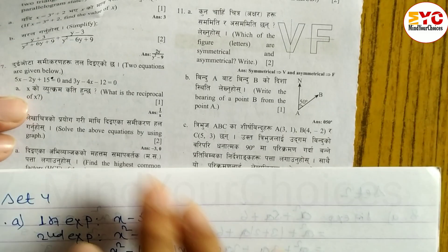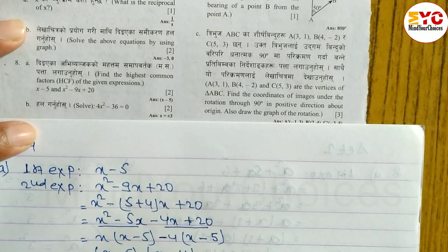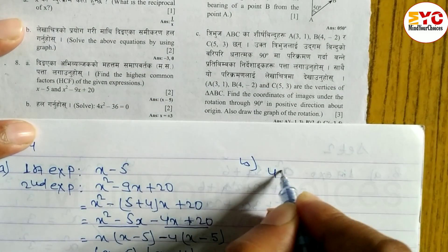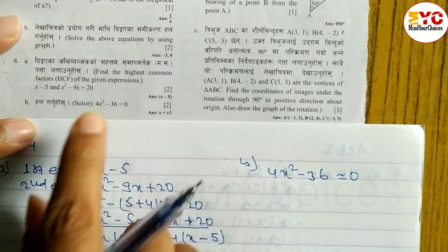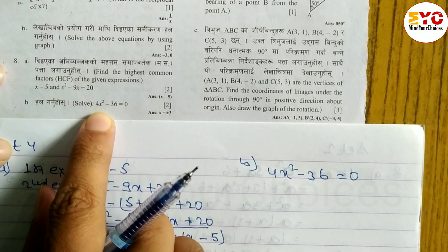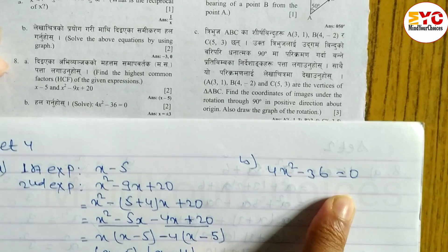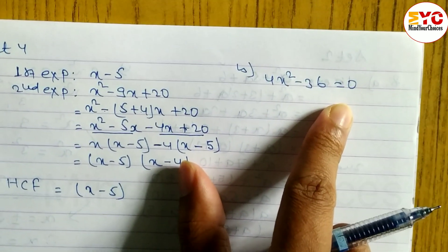Now, question part b what is it? Question part b we have to solve. 4x square minus 36 is equal to 0. 4x square minus 36 is equal to 0. We have to solve this, we have to find out the value of x.